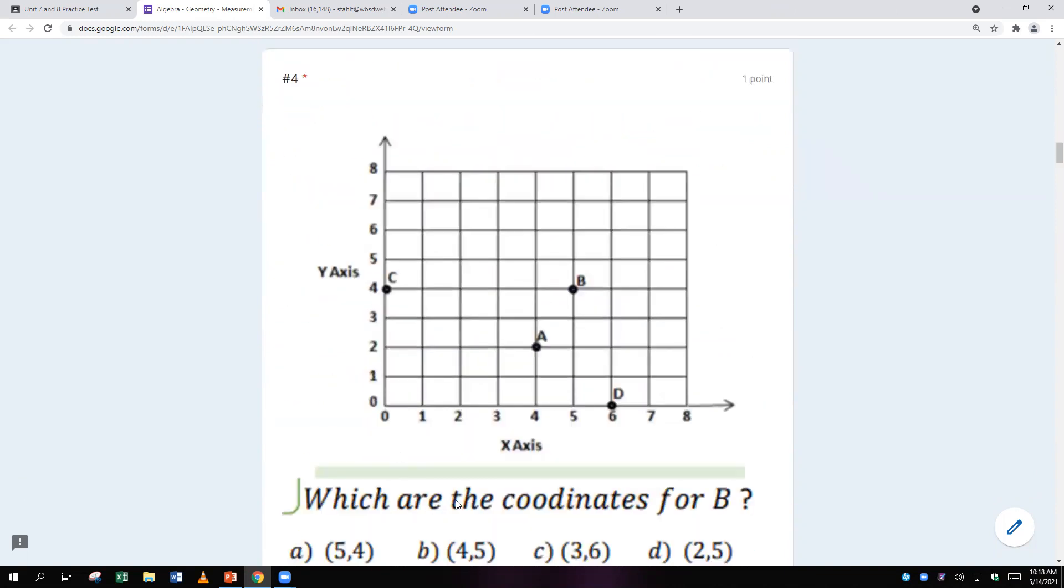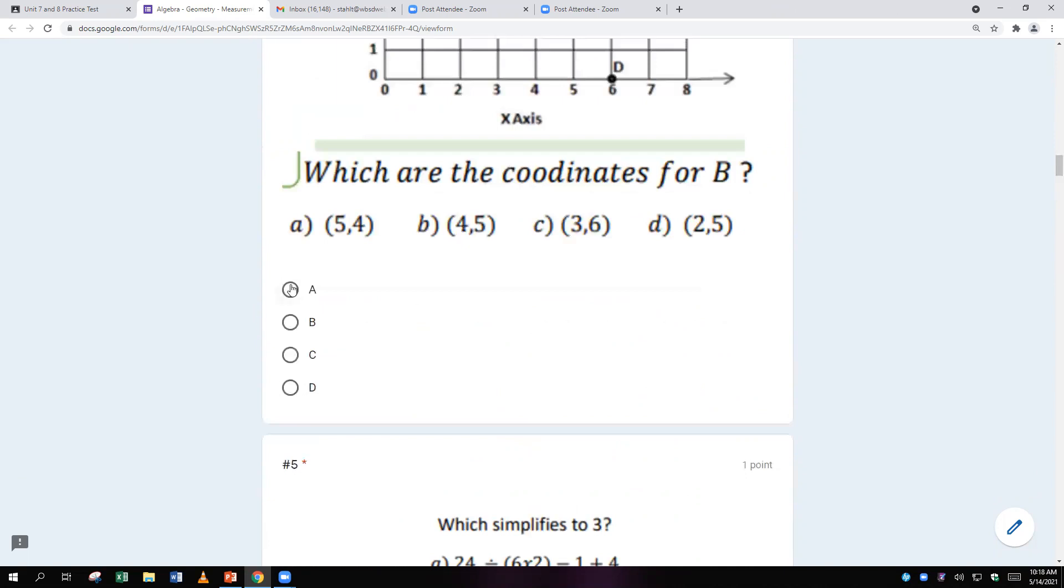This one says which are the coordinates for B? B, well, look at B's right here, 5 over, 4 up. So 5, 4, which is A.